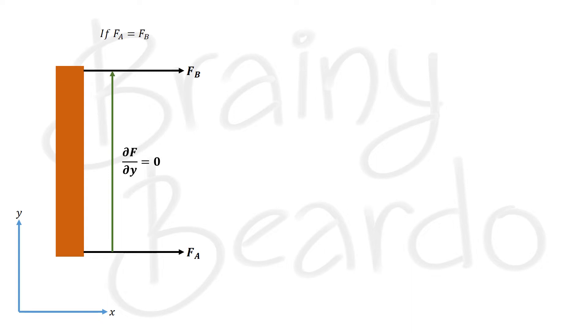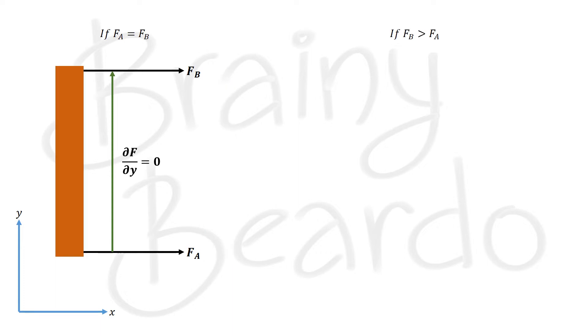In this case, the object moves forward without any rotation. But what if F_B is greater than F_A? That means the gradient of F along the y-direction is not equal to zero — that is, ∂F/∂y ≠ 0. From experience, if two people pull a table from two ends and one person applies more force than the other, the table will not move straight but rather it rotates.